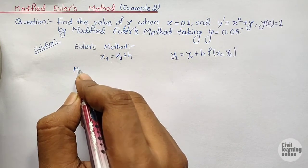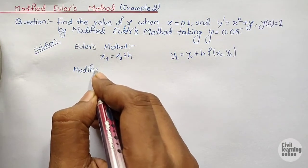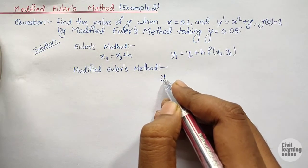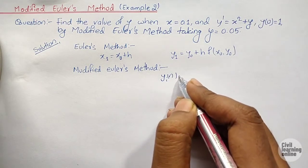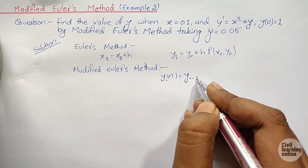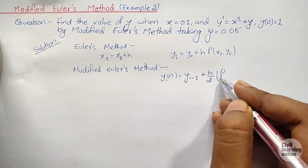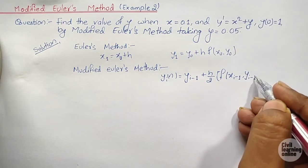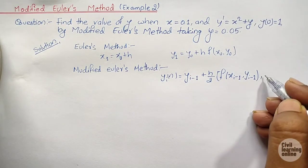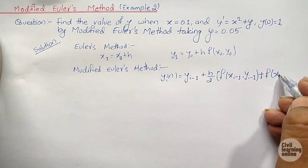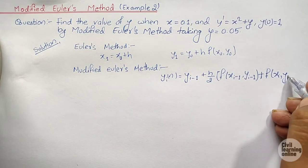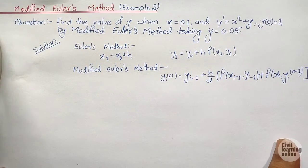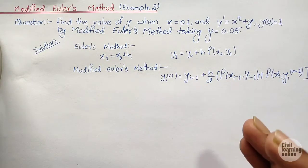The formula for the Modified Euler's Method is: yᵢⁿ equals yᵢ₋₁ plus (h/2) times [f(xᵢ₋₁, yᵢ₋₁) plus f(xᵢ, yᵢⁿ⁻¹)]. This is the formula for Modified Euler's Method and let us see its application by solving this numerical.